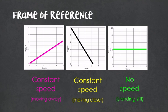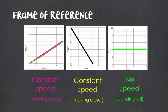For this first graph, we have a constant speed — we know that because it's a straight line. Because the distance is increasing, the object is moving further away from our point of reference. For our second graph, it's again a straight line, so still a constant speed, but our distance is decreasing, meaning the object is getting closer to our point of reference. And if we ever have a flat horizontal line, that means we have no speed — our object is standing still.